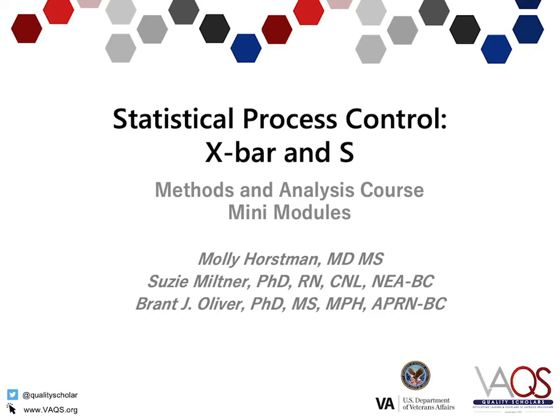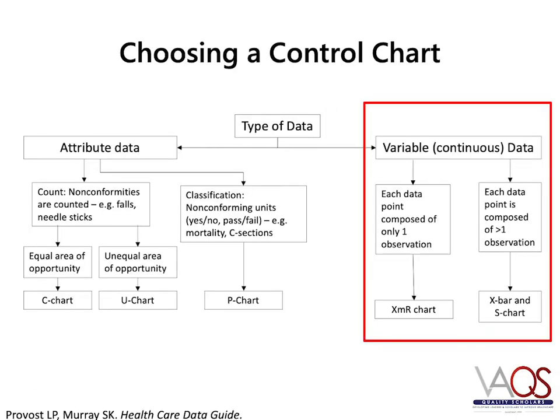The X bar and S chart is used for variable or continuous data when there is more than one observation per data point. In this mini-module, we are focusing on statistical process control charts for variable or continuous data. Variable data is quantitative data that uses a measurement scale. Variable data includes clinical measures such as blood glucose and operational measures such as the number of patient visits or hospital length of stay. For variable data, the two most common charts used are the XMR chart and the X bar and S chart.